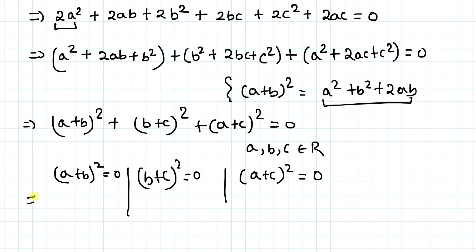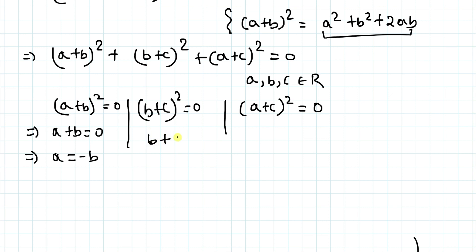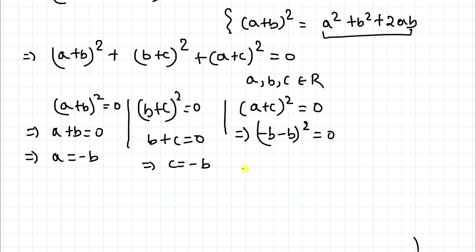From these, we get: a + b = 0, which implies a = −b. And b + c = 0, which implies c = −b. Substituting both into (a+c)² = 0, we get (−b + (−b))² = 0, which gives (−2b)² = 0, so b = 0.